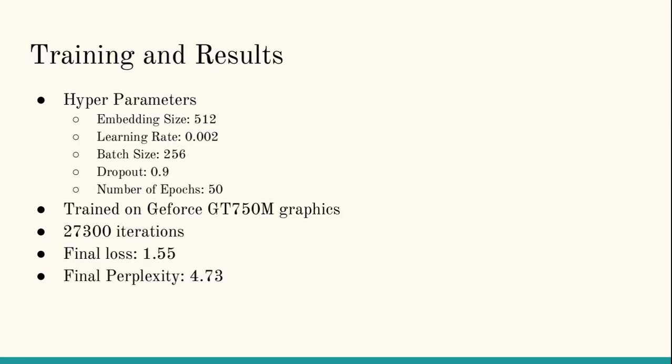Now moving on to training and results. For training, I used the hyperparameters that you can see. When I used a learning rate of 0.02, the results were not so good. The system didn't form sentences properly. There were a few grammatical mistakes as well. So I decreased the learning rate to 0.002, and that seemed to have helped a lot. I ran the training for around 50 epochs, which meant 27,300 iterations on a GeForce GT 750M graphics chipset. At the end of the training process, the final loss was around 1.55, and the perplexity on this dataset was around 4.73, which seemed to be pretty good.